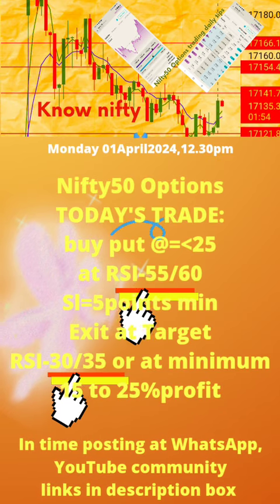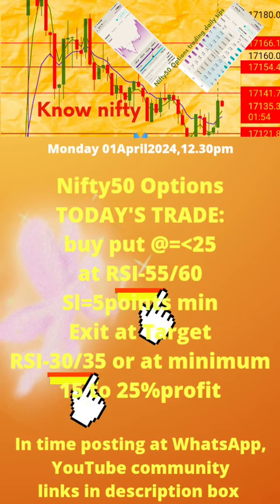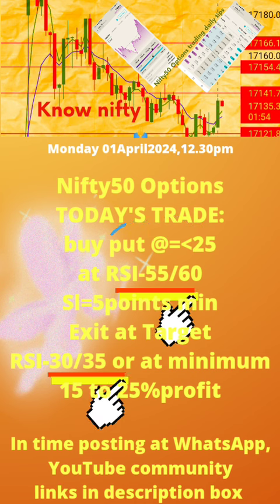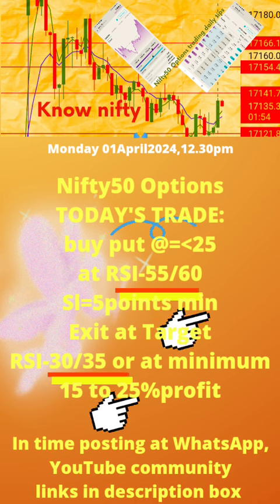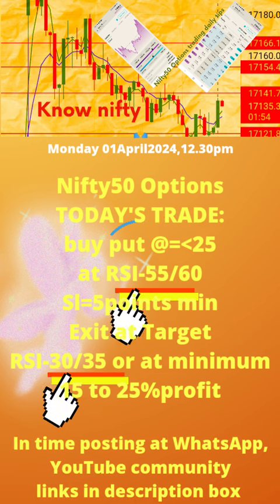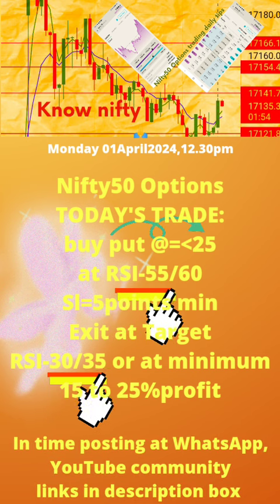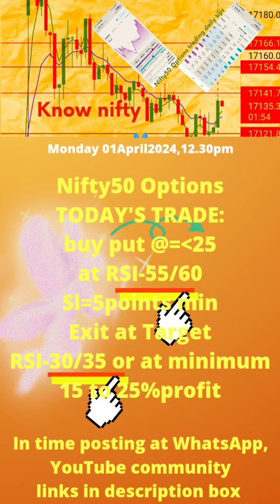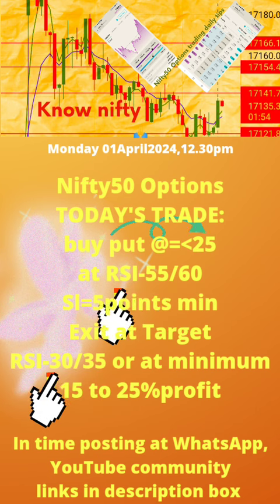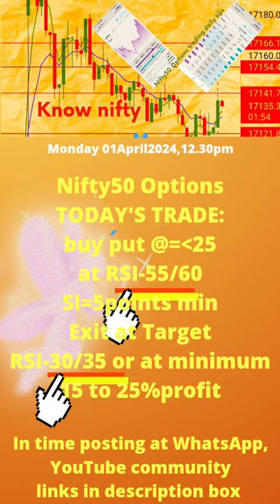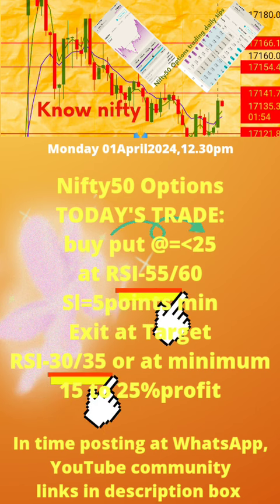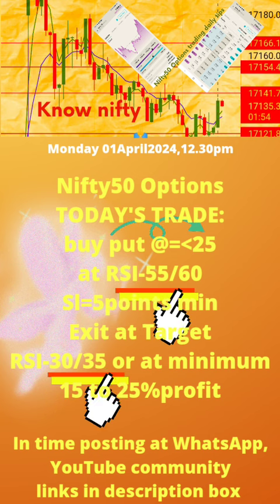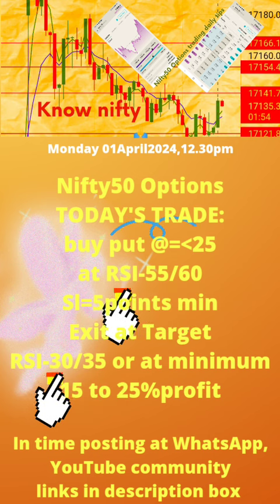Please note: 1. Today's time of post is also mentioned. 2. Buy put or call of strike price with premium value equal to or less than 25 at RSI value updated daily. 3. Apply stop loss of minimum 5 points. 4. Exit at target RSI value updated daily. Now take today's trade as per the updates in this page.